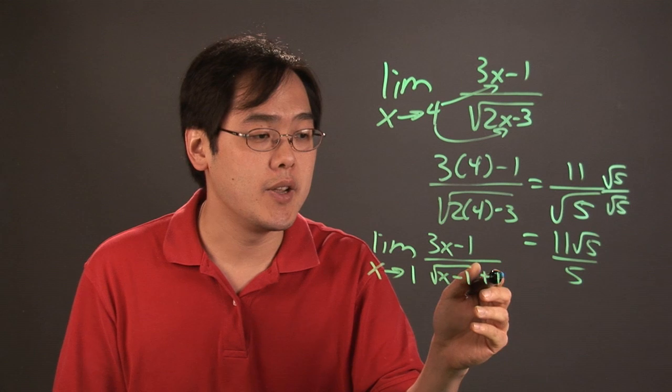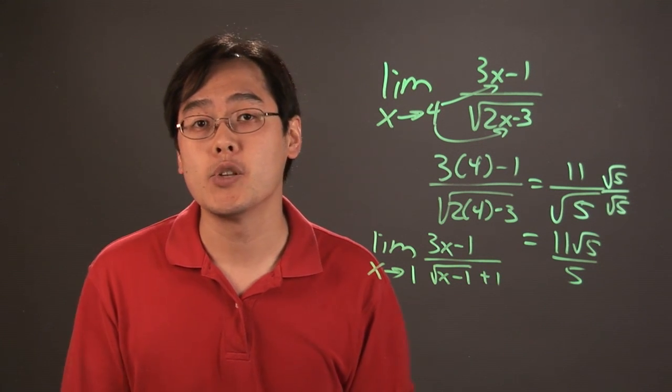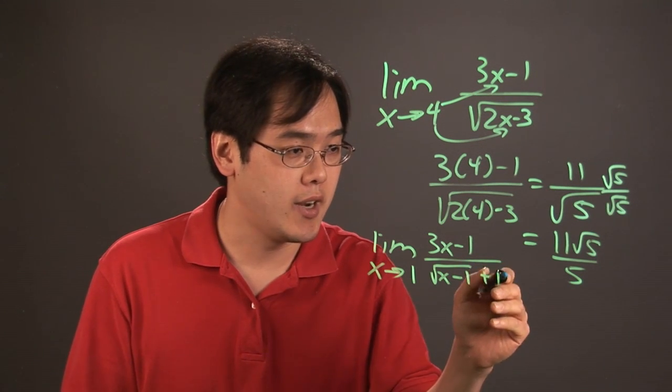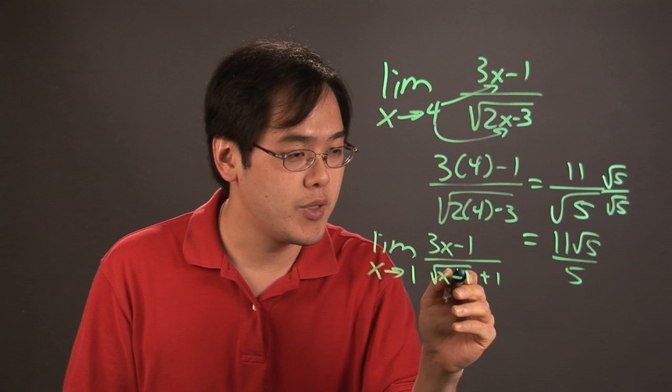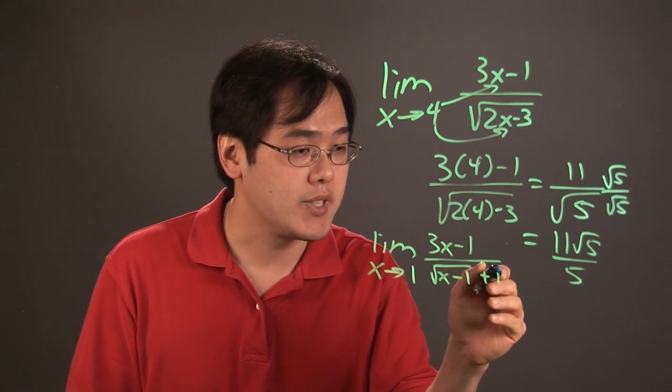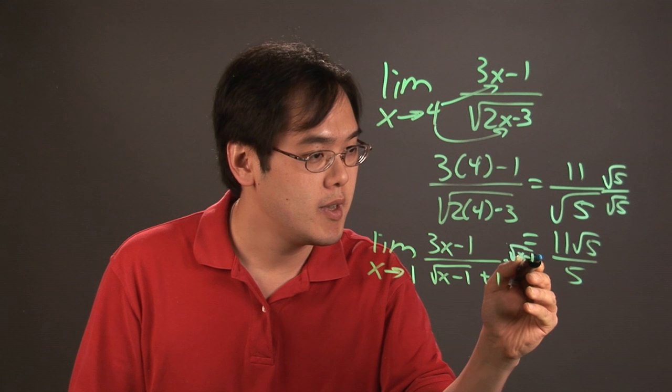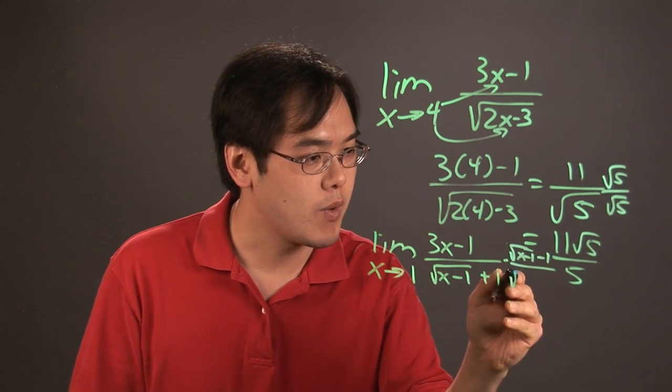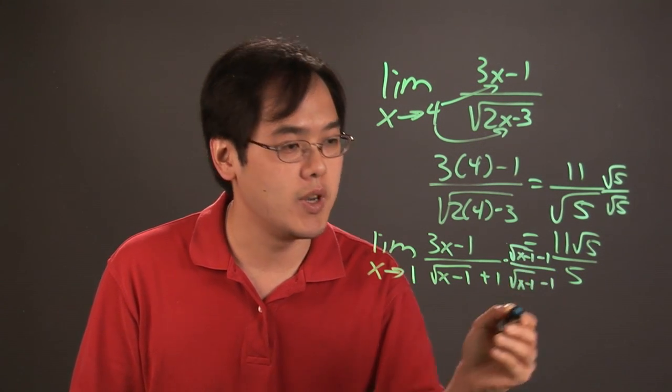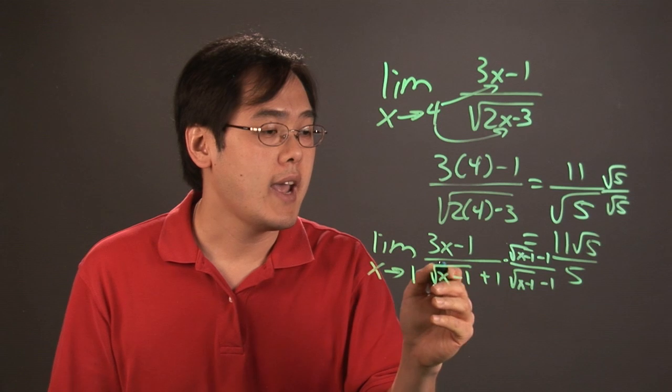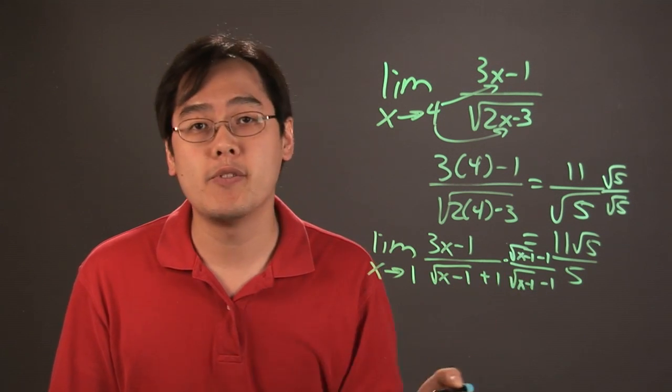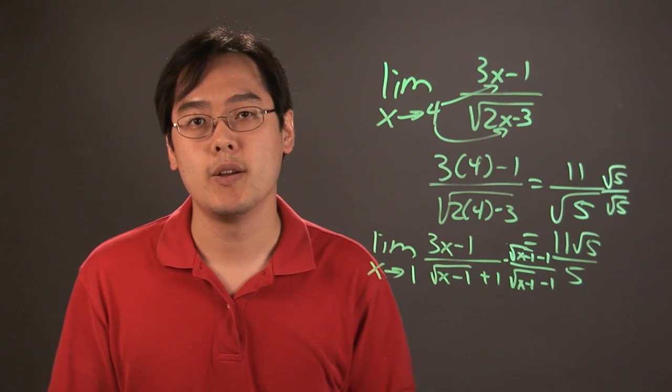Now, if you have a radical and another number here, what you definitely have to do is rationalize the denominator, and that is multiply both the top and the bottom by its conjugate. So it'll be square root of x minus 1 minus 1 over square root of x minus 1 minus 1. You've got to do some foiling there, and after you foil and simplify, then you can plug in the number.